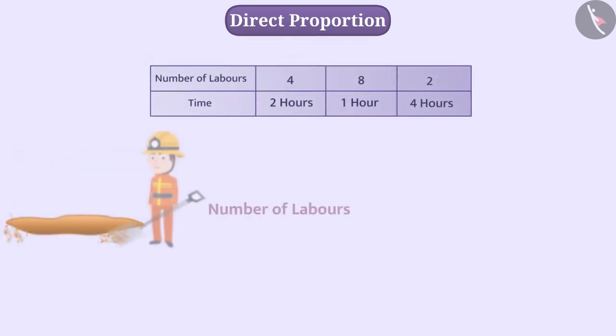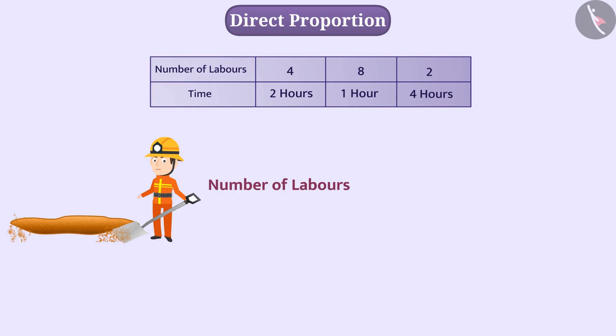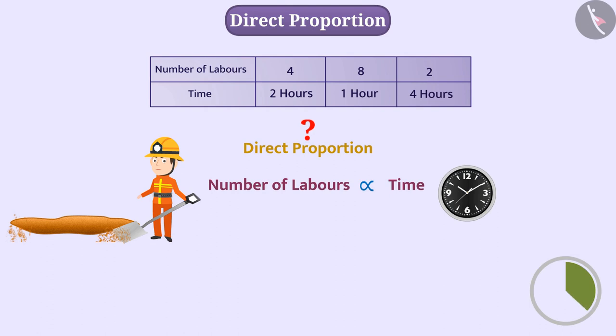Is the number of laborers for certain job also directly proportional to time? No, they cannot be in direct proportion because if the number of laborers increases, the time required will be less.